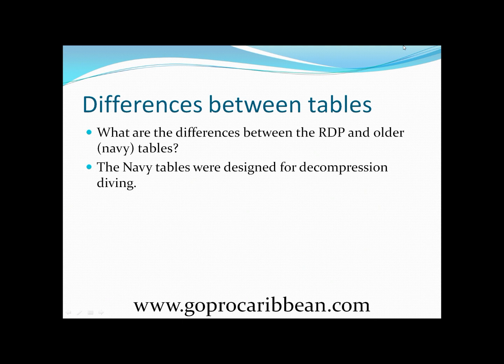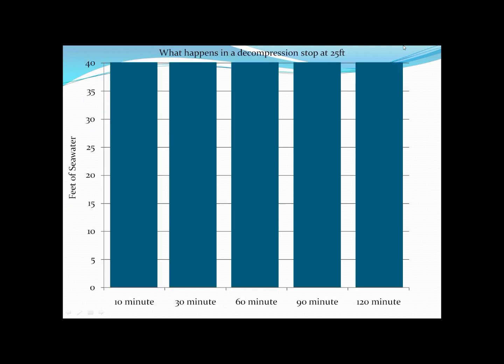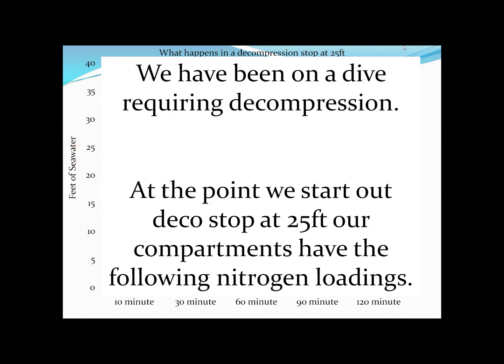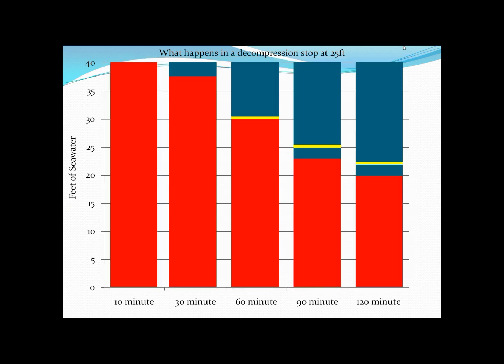You're probably thinking — what on earth does that mean? Why would the tables differ whether you're going to be decompression diving or not? Well, let's have a look at why. I've brought up a graph or chart that you're very familiar with, and what we're going to do is use it to look at what might happen during a decompression stop at a depth of 25 feet. What we're imagining is that we have been on a dive requiring decompression. At the point we start our deco stop at 25 feet, our five different compartments have the following nitrogen loadings.